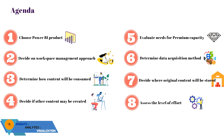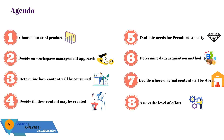In Stage 2, first we have to choose a Power BI product. Secondly, we have to decide on a workspace management approach. Thirdly, we have to determine how content will be consumed. After that, we will decide if other content may be created. In step 5, we evaluate needs for premium capacity. In step 6, we determine data acquisition methods. In step 7, we decide where original content will be stored. And lastly, we assess how much effort and what resources we are going to need.